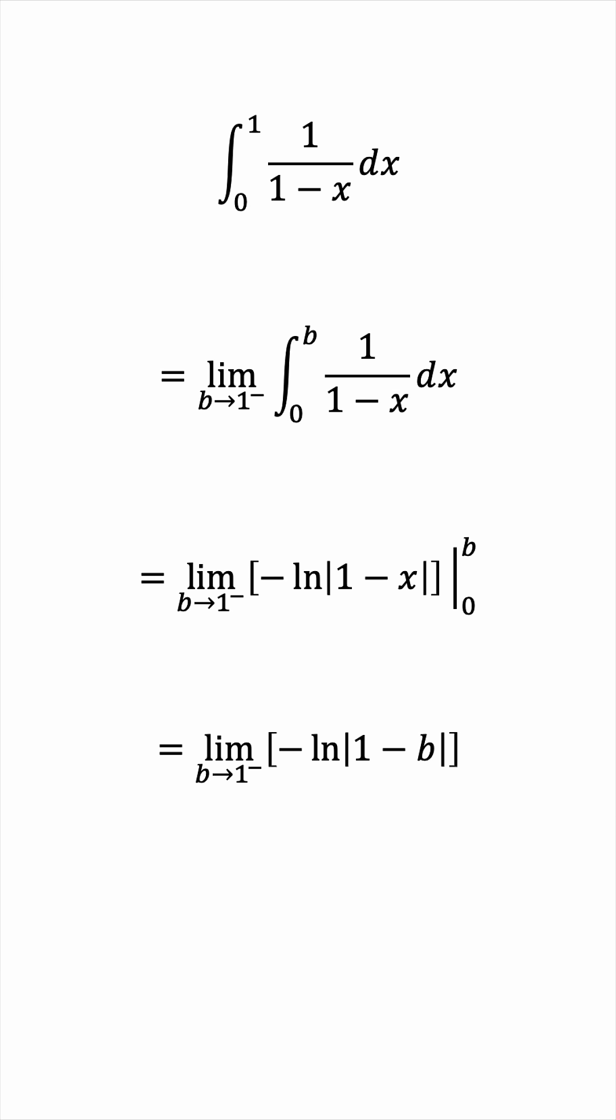We can take the negative sign outside the limit and now notice if b approaches 1 from below, then the input of the natural log, 1 minus b, will approach 0 from above. 1 minus something a little bit less than 1 is a tiny positive number, 0 plus.